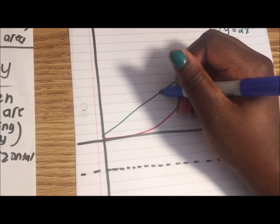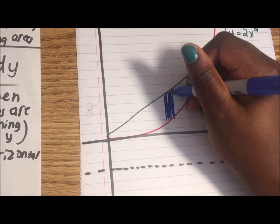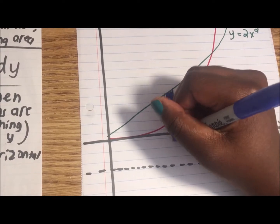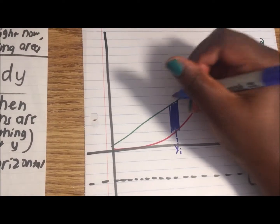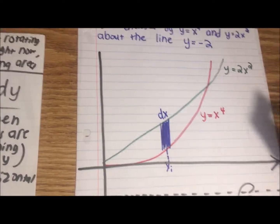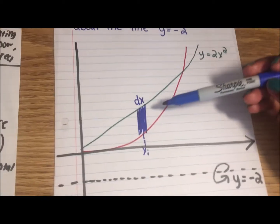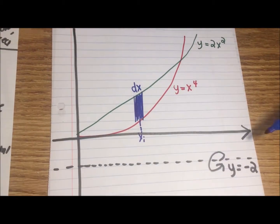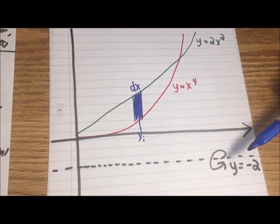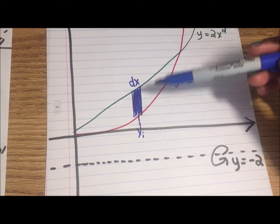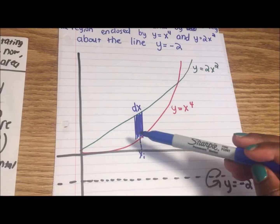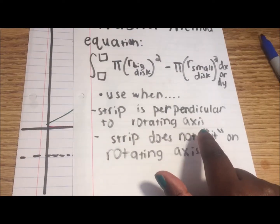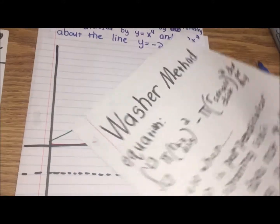Let's draw our strip here. As you can see, this is a vertical strip and the rotating axis is perpendicular to the vertical strip. Also, the strip does not sit on the rotating axis — the rotating axis is all the way down here and the strip doesn't even touch it. Since the strip is perpendicular to the rotating axis and does not sit on it, that's why we're using a washer.